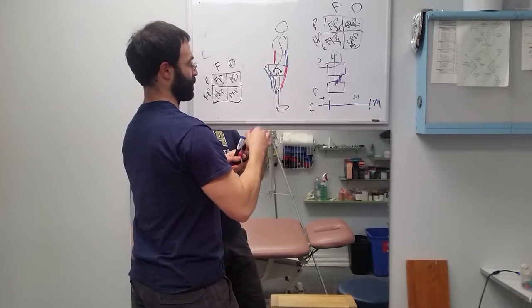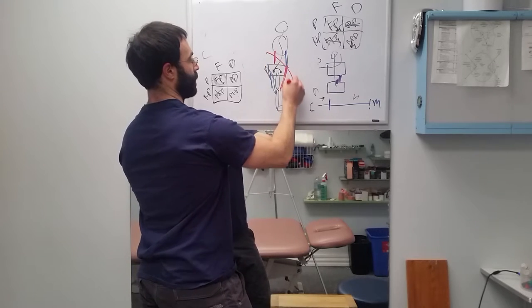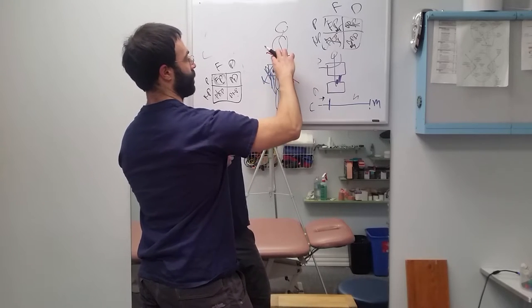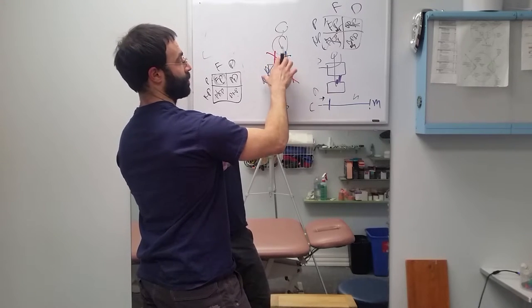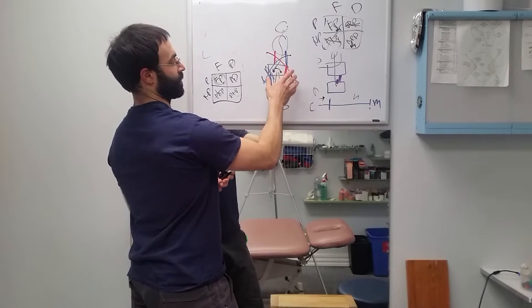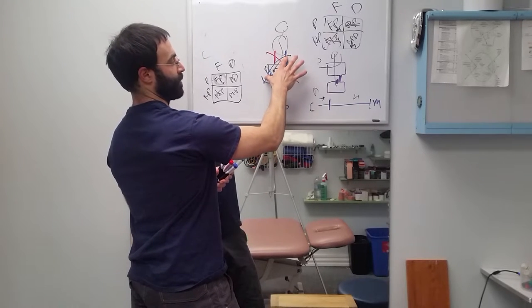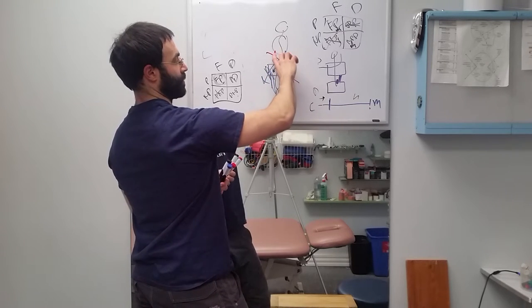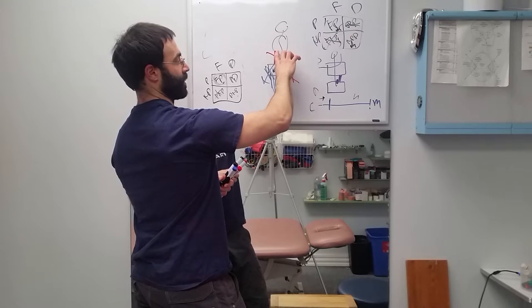All these guys working together forms our classic lower cross pattern—people tend to dominate forwards more than backwards. That forms our classic lower cross pattern of abdominals and hip extensors giving us lower back flexion and hip extension, and hip flexors with lower back erectors giving us lower back extension and hip flexion.